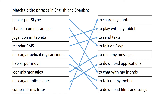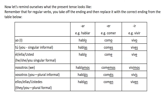Double check that you've got all of those matched up correctly to start us off. This is our present tense revision. Don't forget, we've got three different types of verbs in Spanish. We've got AR verbs, ER verbs and IR verbs.